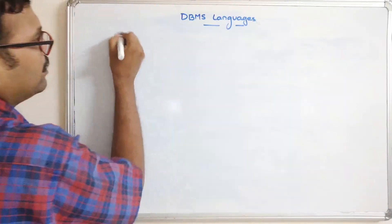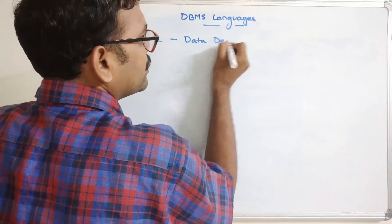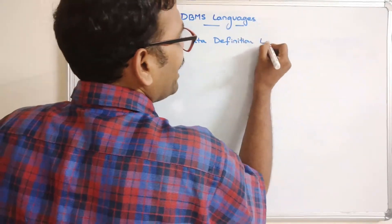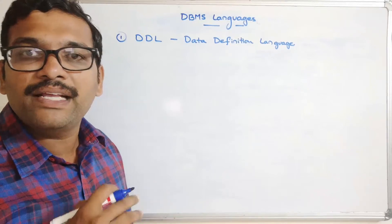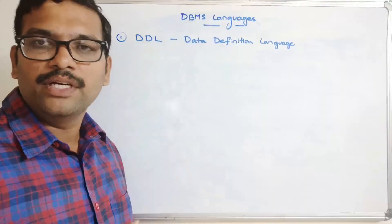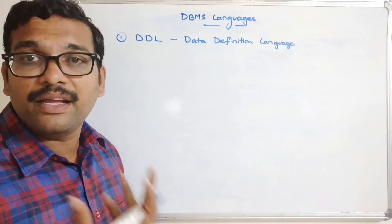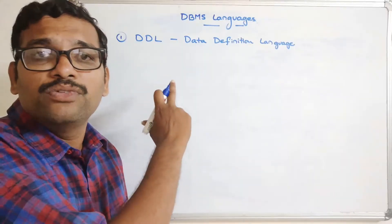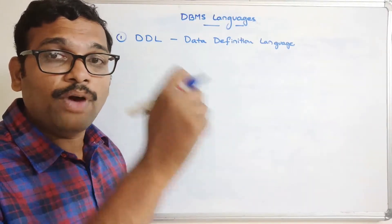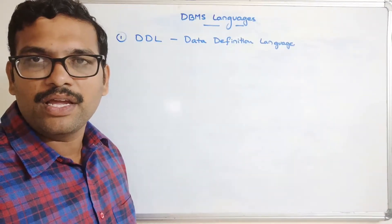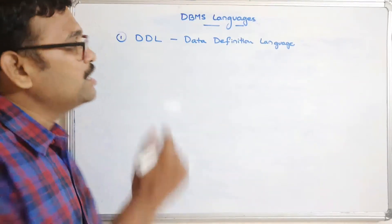The first one is DDL, which stands for Data Definition Language. As the name indicates, it is used to define the structure of the database — creating the schema, creating tables with logical constraints. DDL commands work on the structure of the database, not the data itself.